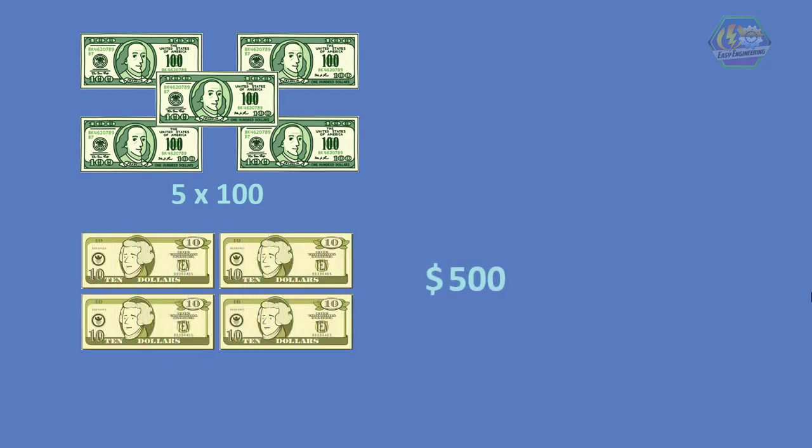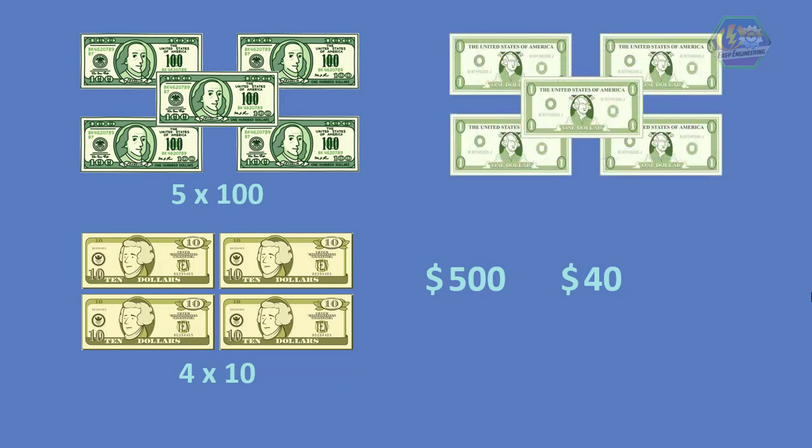She also earned 4 ten dollar bills, so 4 times 10 equals 40 dollars. And she has 5 one dollar bills, so 5 times 1 equals 5 dollars.